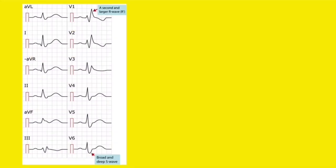Looking at this ECG, we can see in V1 there is an RSR' pattern, and in V6 we can see an RS pattern with a deep, broad, and slurred S wave in V5, V6, and lead I AVL. This is the characteristic ECG of right bundle branch block: in lead V1 we get the RSR' pattern, and in leads AVL, V5, and V6 we get a broad, deep, and slurred S wave.